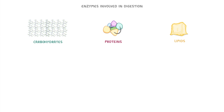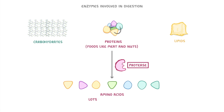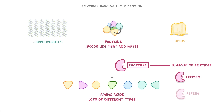Moving on to proteins, these are found in foods like meat and nuts, and they're broken down by protease enzymes into amino acids. It's worth knowing that there are lots of different types of amino acids, but they're all pretty similar, and you don't need to know what the differences between them are. Also, the term protease refers to a whole group of enzymes, which include specific enzymes like trypsin and pepsin.